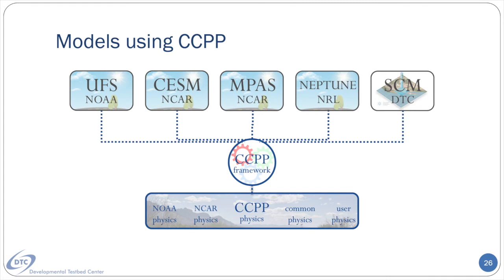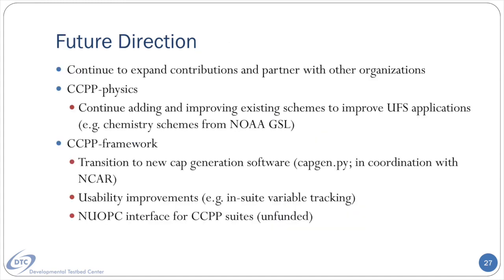To provide even larger context than the UFS, the CCPP is slated to be used in some way by several flagship models from multiple institutions, notably including NCAR and the Naval Research Laboratory. The CCPP is well positioned to become a standard across modeling institutions. In my opinion, the extent to which the standard is adopted will dictate whether the dream of easily sharing physics across institutions, academia, and the broader community is realized.